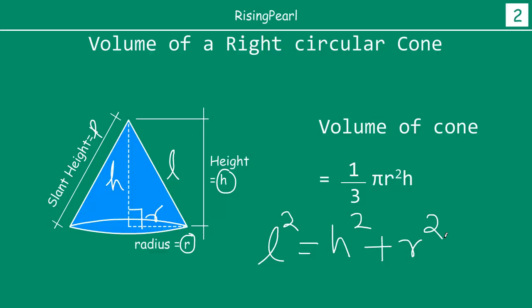The reason I said that is because sometimes if you know two of the three — l, h, or r — you can find out the third one.